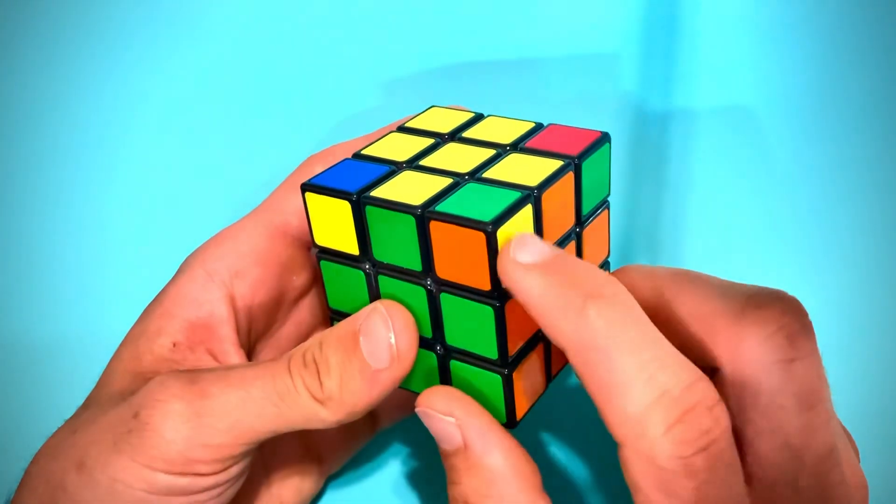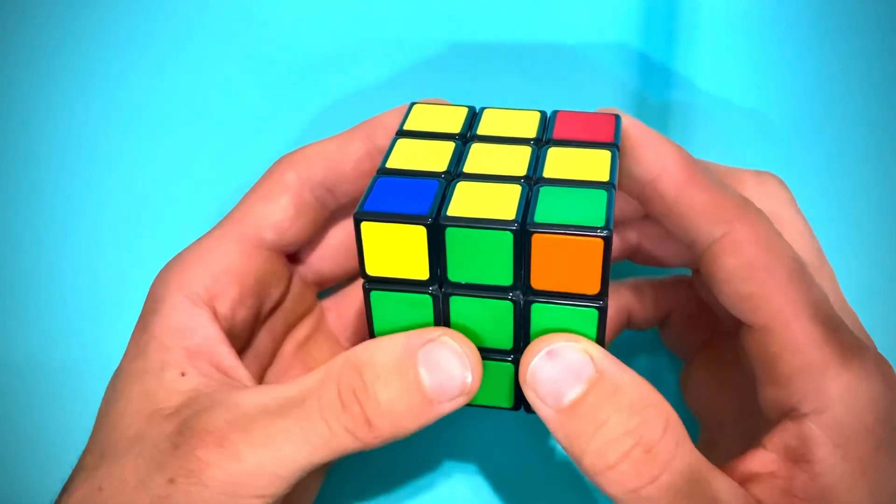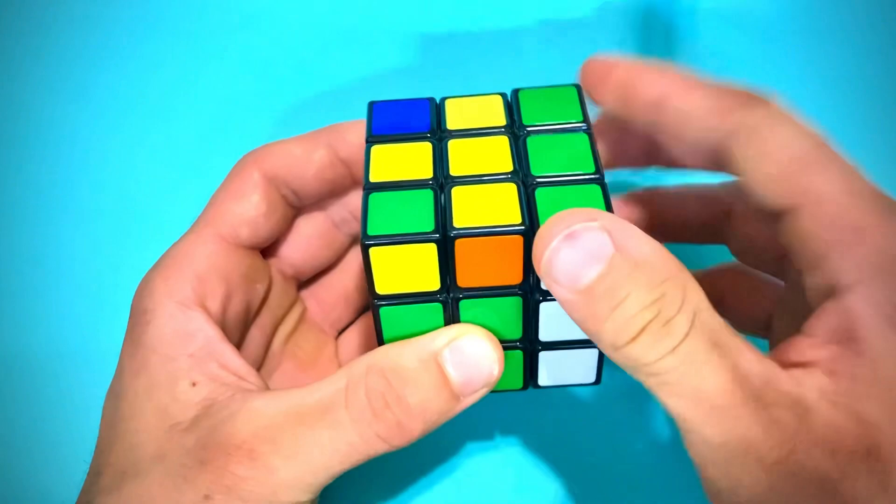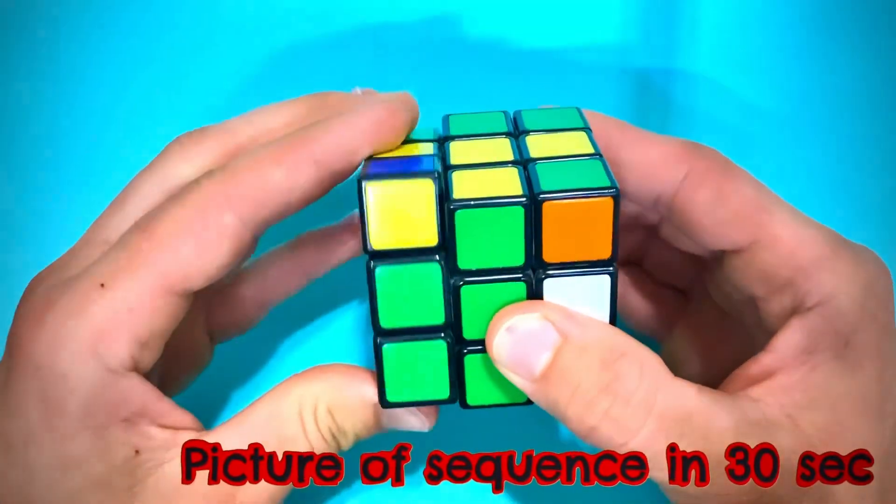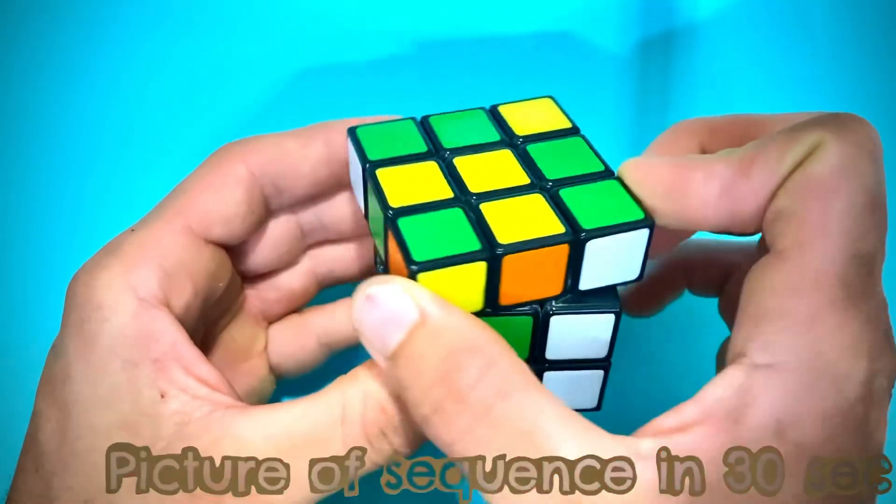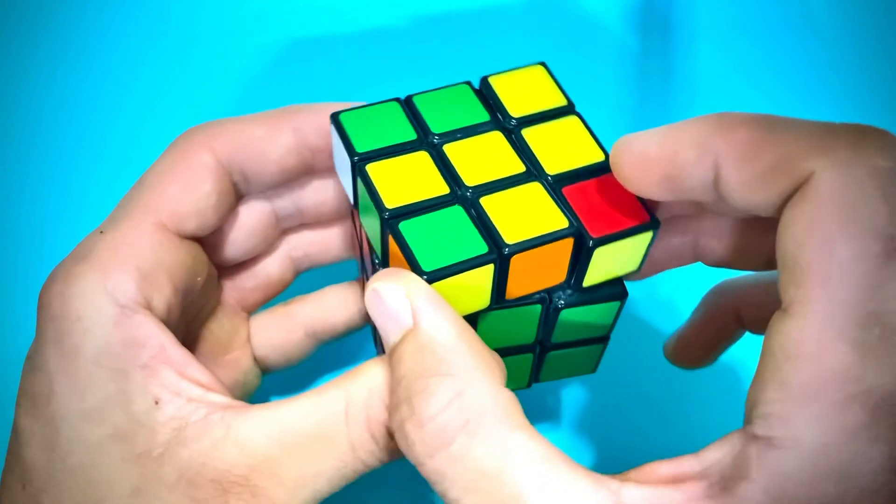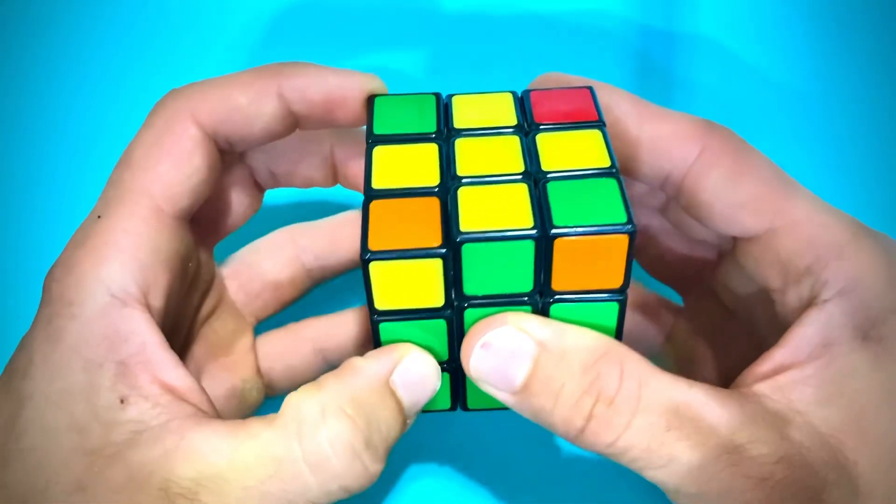With that in mind, hold this corner on the right side and follow this sequence. To the left, up with the right side, back to the right with the top layer, up with the left side, to the left with the upper layer, down with the right side, across with the top and then down with the left side.